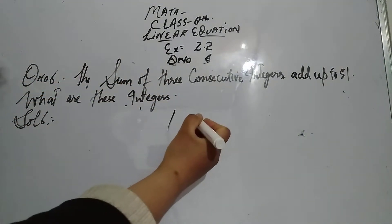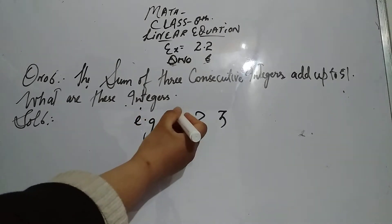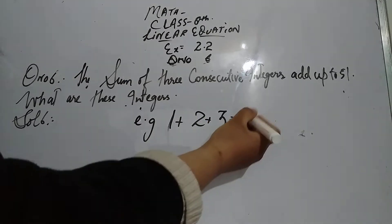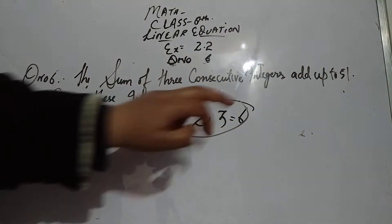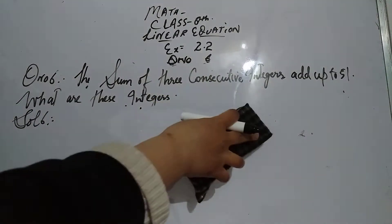For example, if I take 1 plus 2 plus 3, it will come out to 6. These are the consecutive numbers and the sum of these three consecutive numbers is 6. Now we have to find which numbers sum to 51.